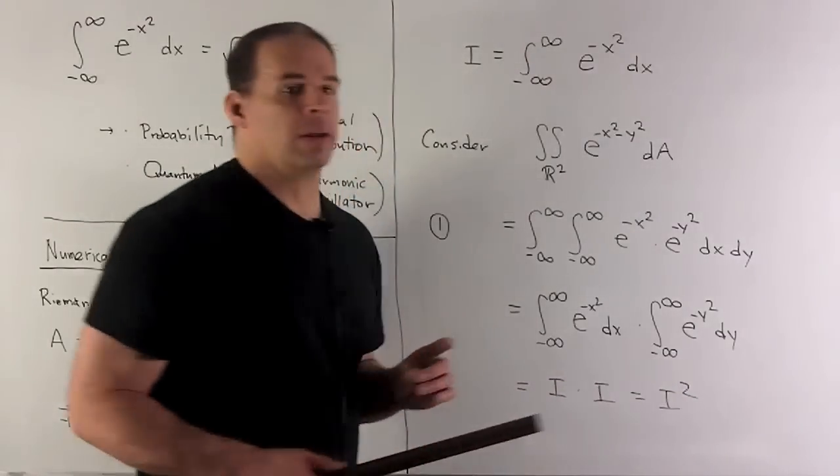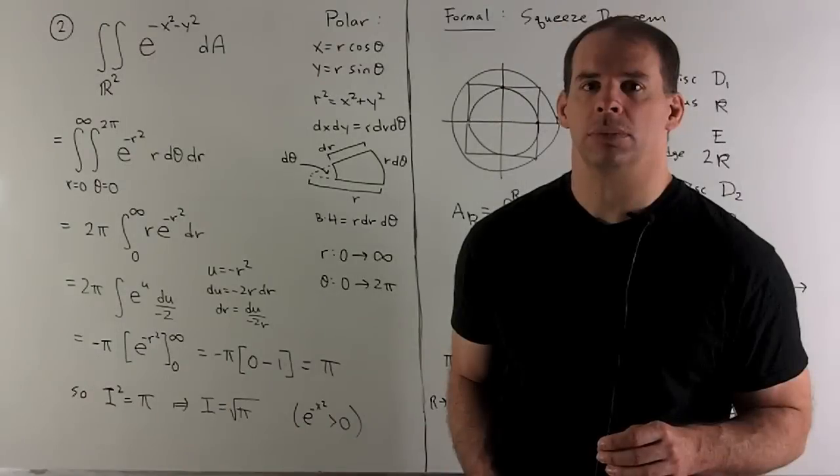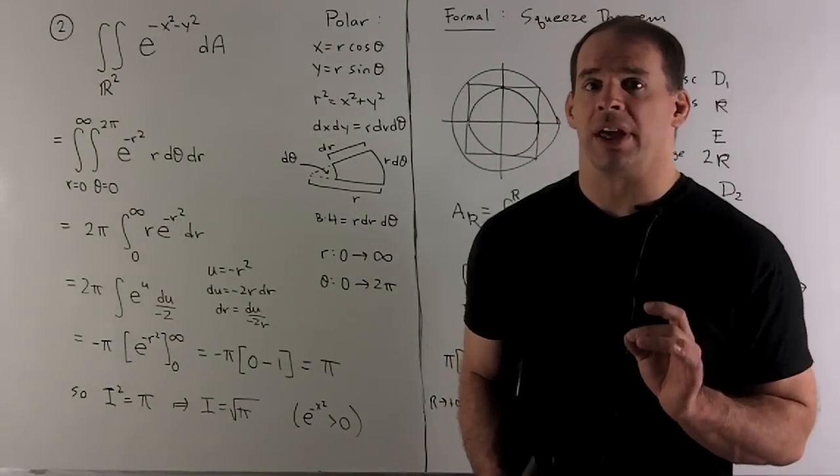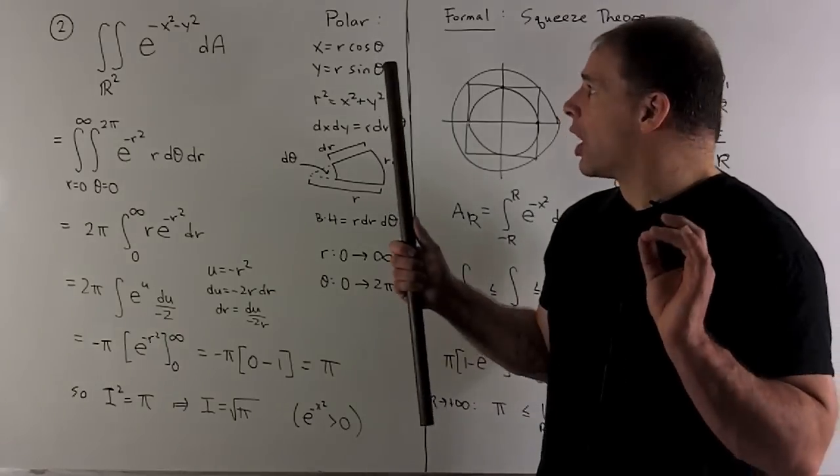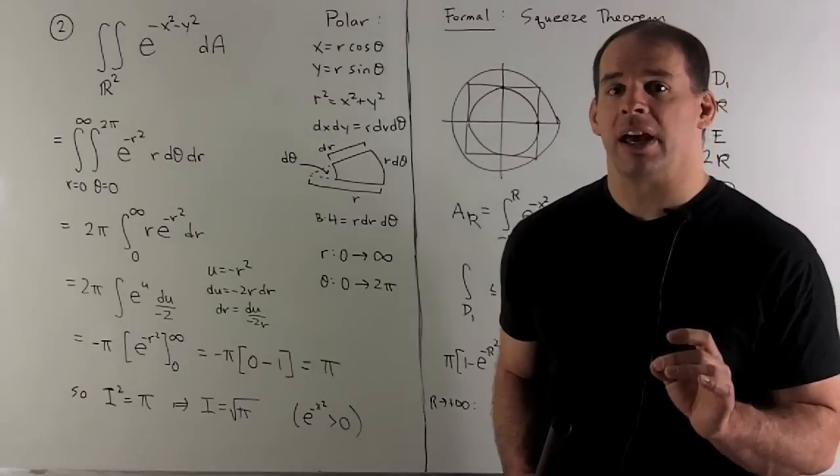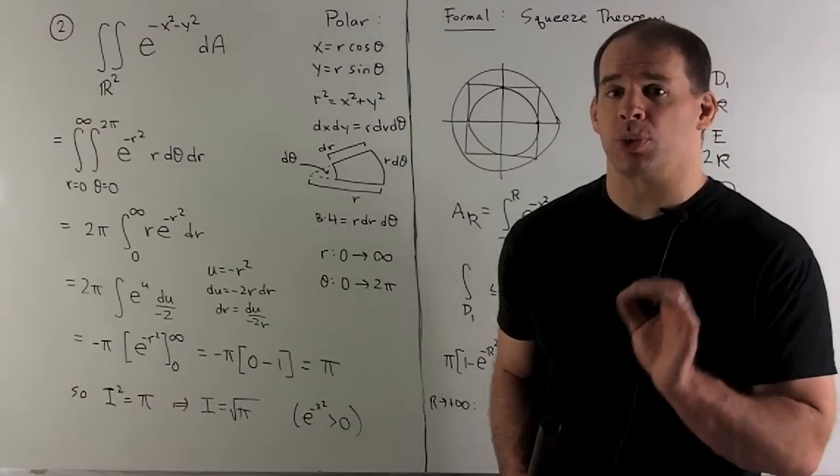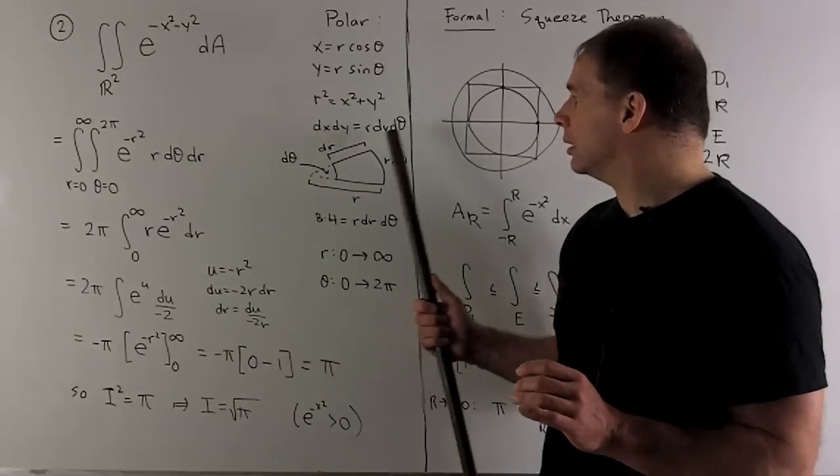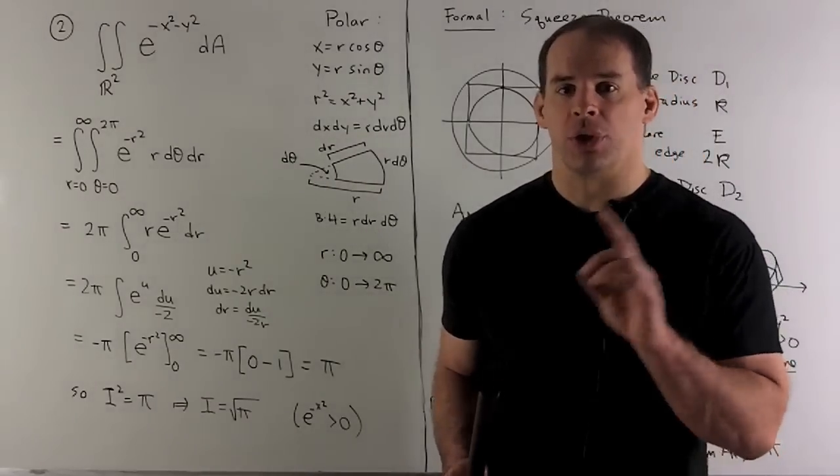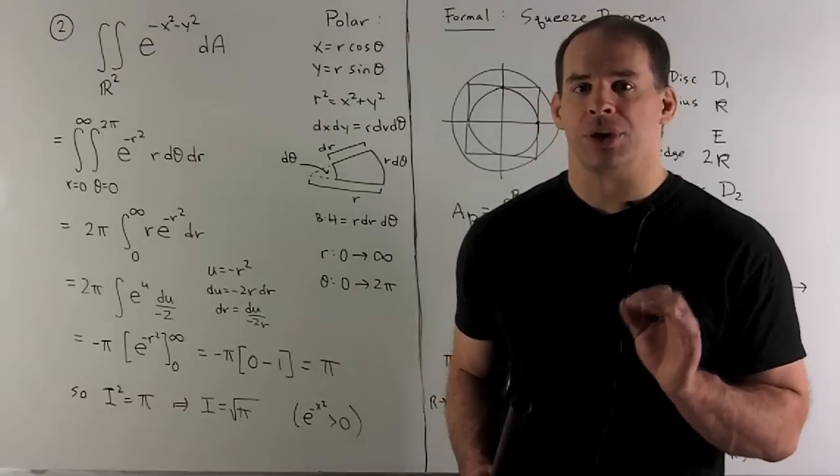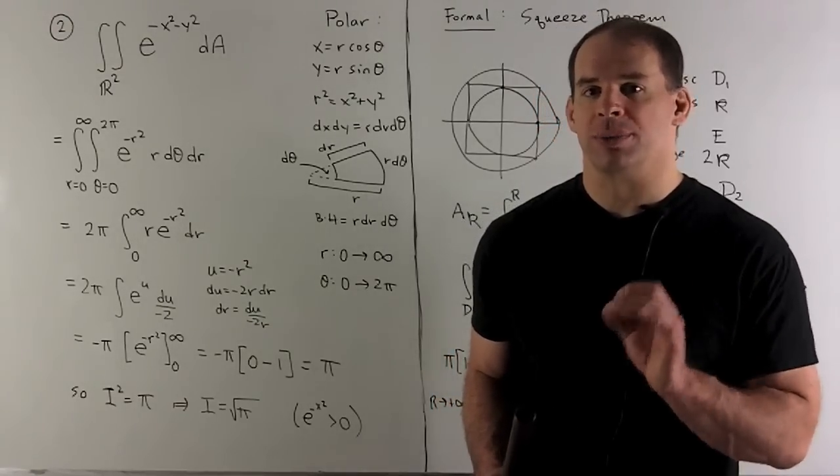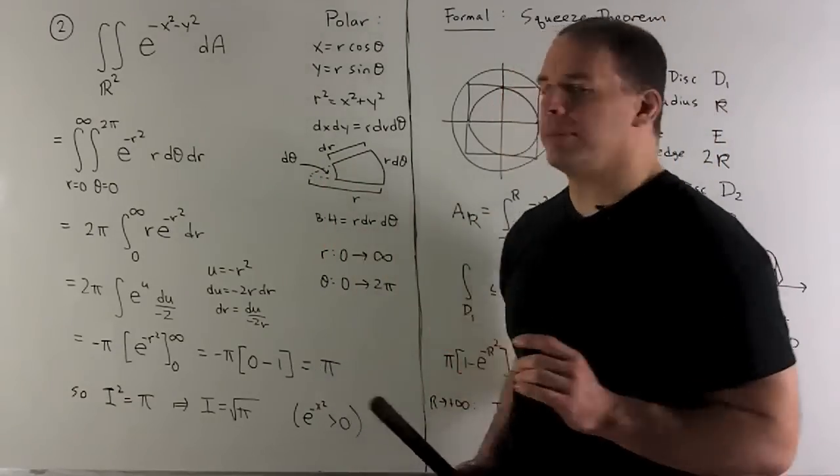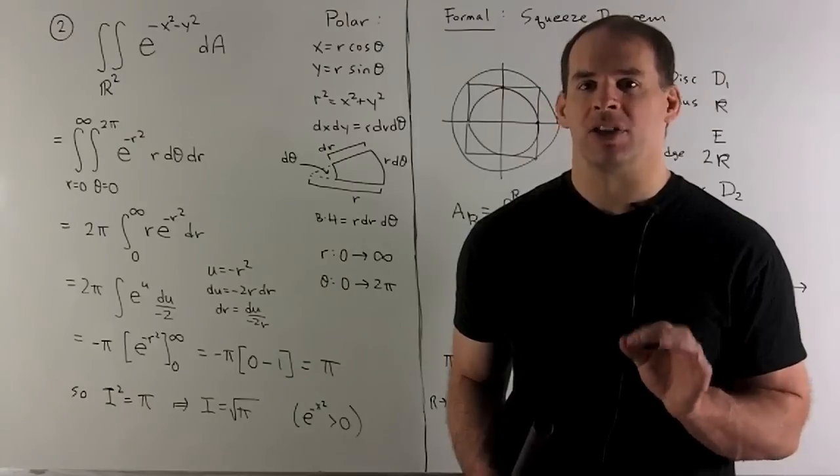Let's take the integral over the plane again, except now we'll use polar coordinates. We change: x = r cos θ, y = r sin θ, r² = x² + y², dx dy = r dr dθ. For the limits, we're still going over the entire plane, so θ goes from 0 to 2π and r goes from 0 to infinity.